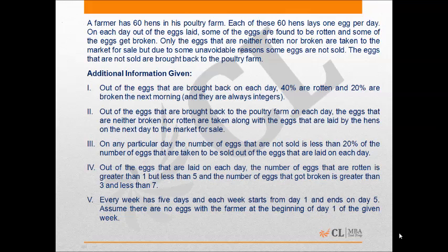The eggs that are not sold are brought back to the poultry farm. Out of the eggs that are brought back on each day, 40% are rotten and 20% are broken the next morning, and these numbers are always integers. The eggs that are neither broken nor rotten from the returned batch are taken along with the next day's freshly laid eggs to the market. On any particular day, the number of eggs not sold is less than 20% of the eggs taken to be sold from the eggs laid that day.